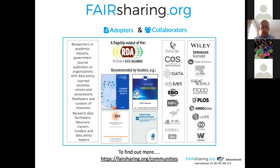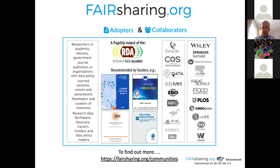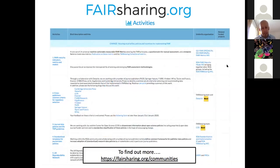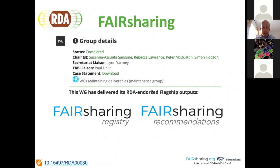We have a number of adopters and collaborators. We're part of the Research Data Alliance (RDA) and recommended by funders mainly within the European Union such as Horizon 2020. We work with organizations such as DataCite and the Center for Open Science, and with various journal publishers. If you want to see more about our activities — we have about 14 listed on our activities table — visit fairsharing.org/communities. Our RDA working group is now finished and in maintenance mode, with two outputs: the registry FAIRsharing and a set of recommendations.